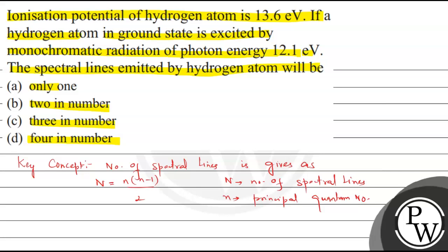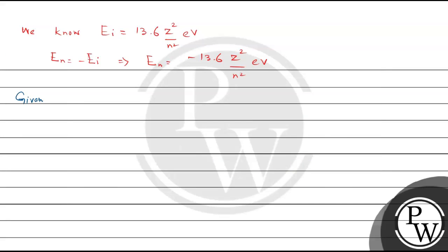Given ionization potential of hydrogen atom is 13.6 electron volt in ground state. For ground state, n=1 and z=1 for hydrogen, so E_n = -13.6 electron volt.